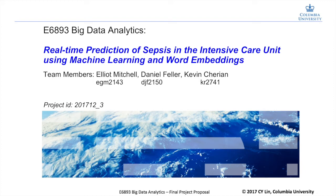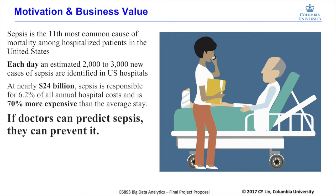Sepsis has a high business value. It's the most common cause of mortality among hospitalized patients in the United States. Each day, 2,000 to 3,000 new cases of sepsis are identified in United States hospitals, at nearly $24 billion in annual health care costs. Sepsis is responsible for 6.2% of health care costs and is 70% more expensive than the average case.